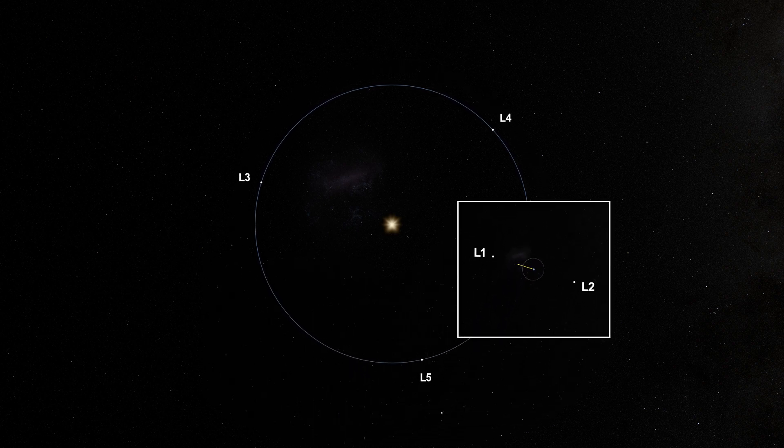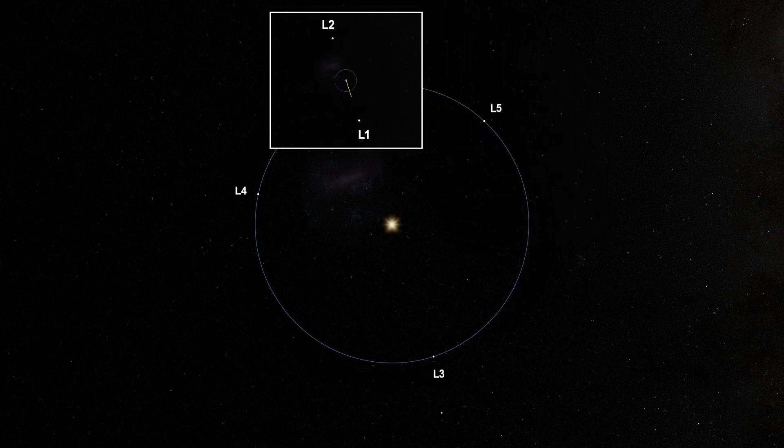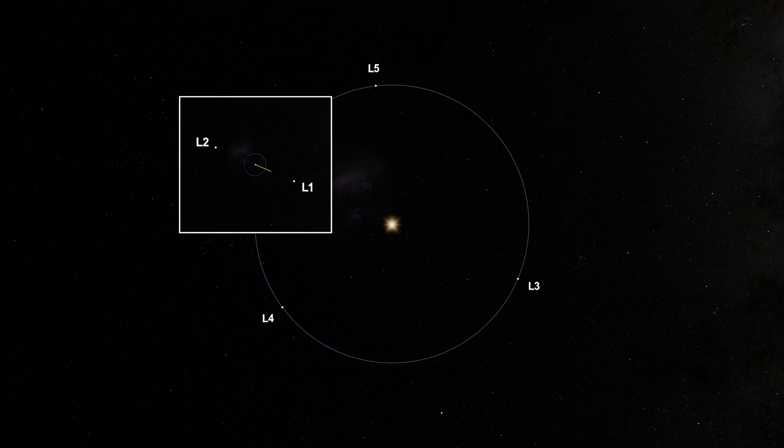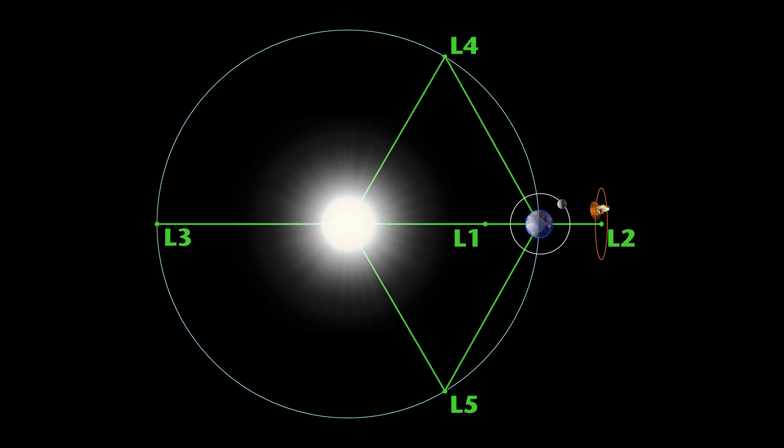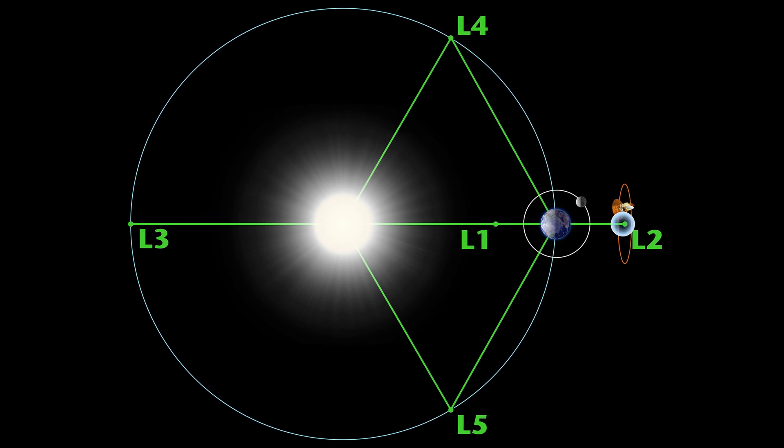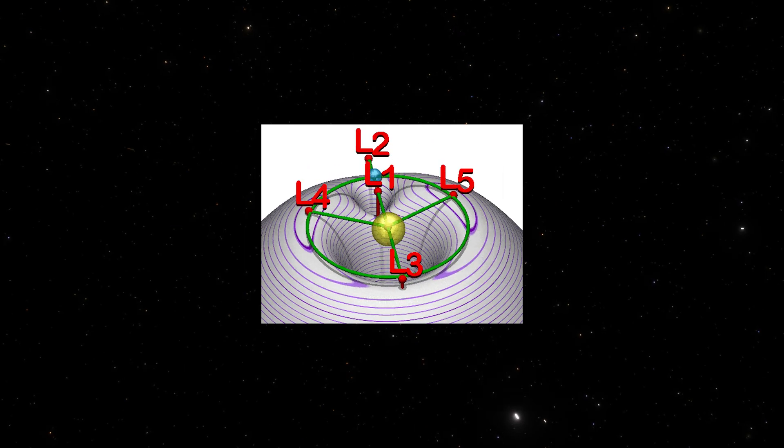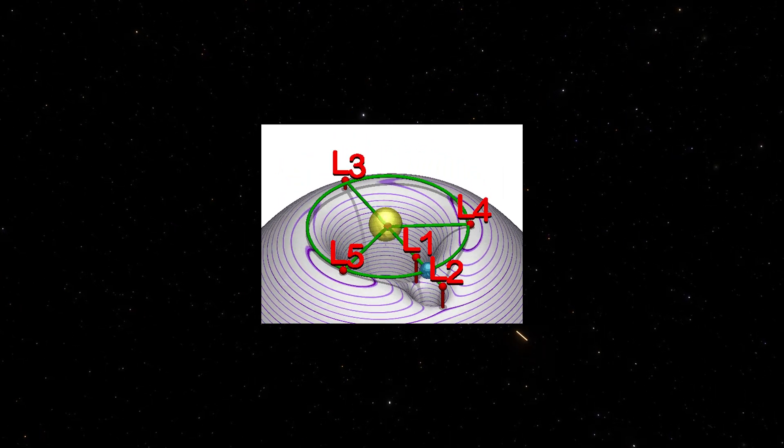The first three points, usually denoted as L1, L2, and L3, also called collinear points, are located along the line connecting the two massive bodies. In the Sun-Earth system, L1 is within Earth's orbit, while L2 is beyond it, both about 1.5 million kilometers from our planet. In these places, the gravitational forces of the two massive bodies seem to cancel each other out.